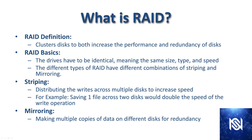RAID is a cluster of disks to increase both the performance and redundancy of disks. The drives have to be identical, meaning they have to be the same size, type, and speed. The different types of RAID have different combinations of striping and mirroring. So what's striping?